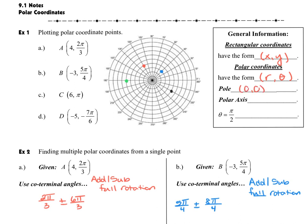The polar axis is going to be our new word to describe the positive x axis. And theta equals pi over two is going to be our new way to talk about the y axis.